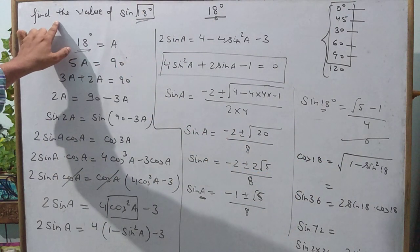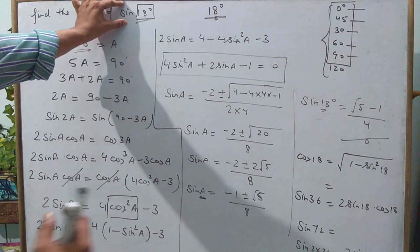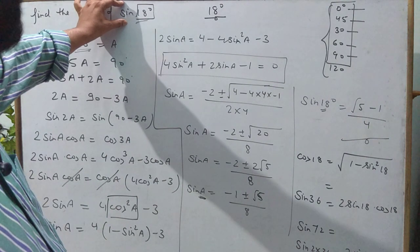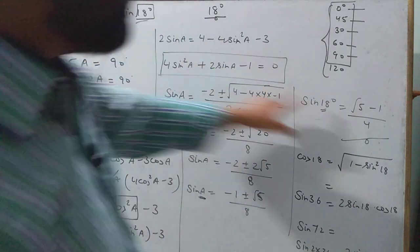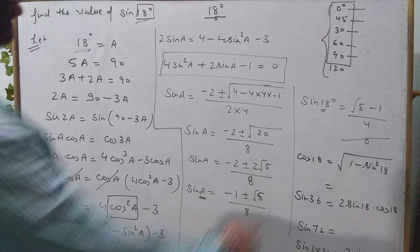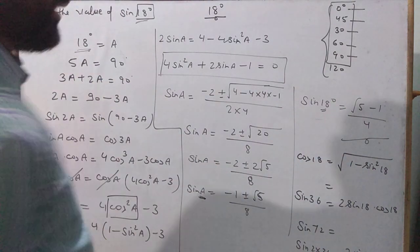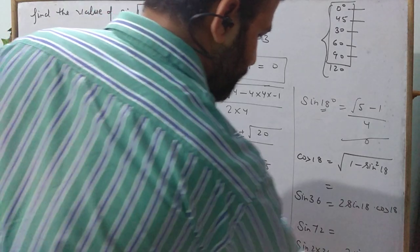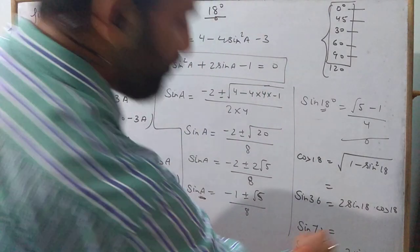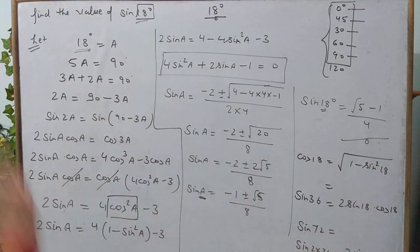If the question says 'prove that' or 'find the value of sin18°' with 4 marks or 3 marks, you must write the full steps. sin36° = 2sin18°cos18°. Similarly, sin72° = sin(2×36°) = 2sin36°cos36°. And cos72° = √(1 − sin²72°). In this manner, once you know sin18°, you can find the values of the multiples of these angles.